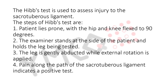The steps of the Hibs test are: 1. Patient lies prone with the hip and knee flexed to 95 degrees. 2. The examiner stands at the side of the patient and holds the leg being tested. 3. The leg is gently abducted while external rotation is applied. 4. Pain along the path of the sacrotuberous ligament indicates a positive test.